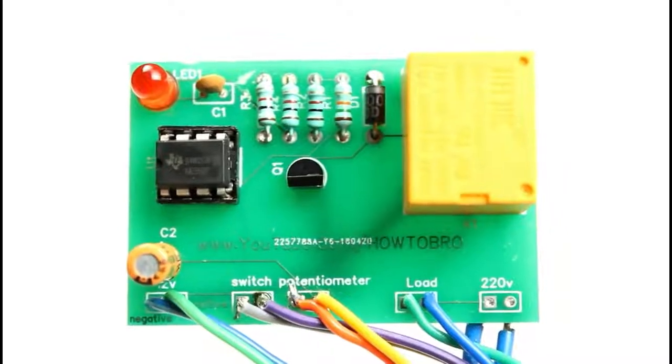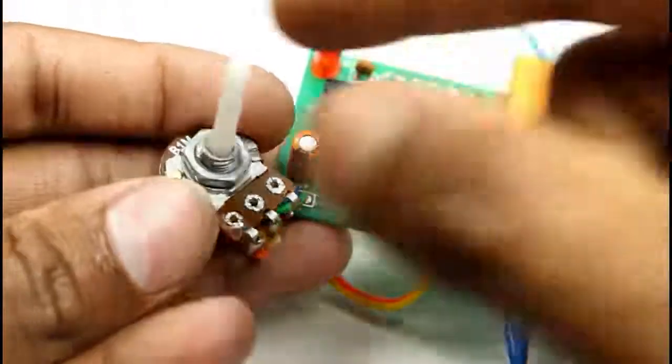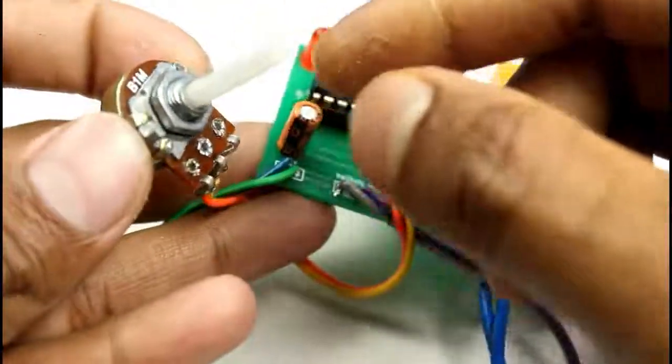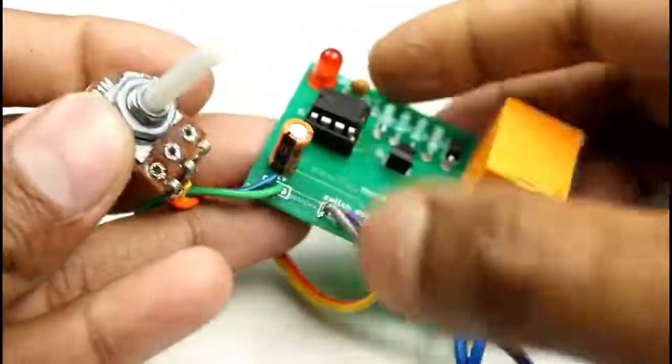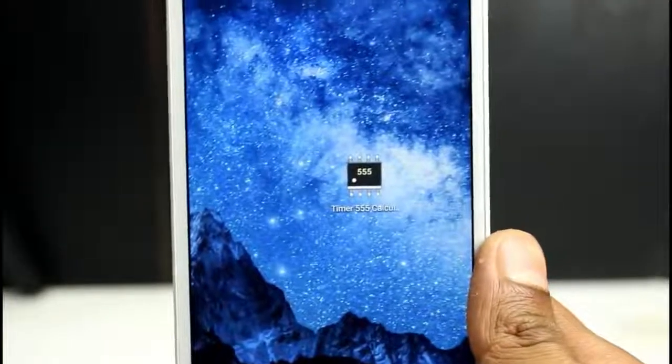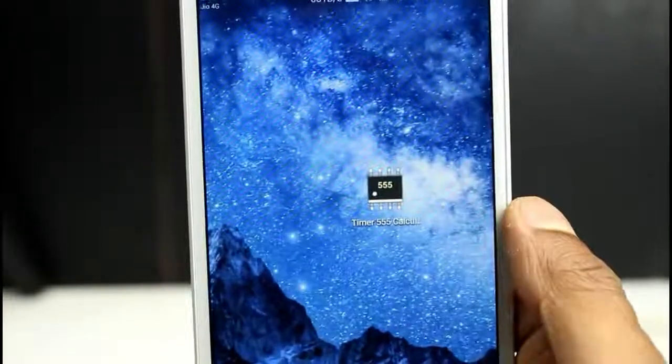Put all the components to the board and solder it. Guys, if you need more times like you want two hours or four hours, in that case you have to change this capacitor and this potentiometer. To calculate the time, download this timer calculator. I put the link in the description below.